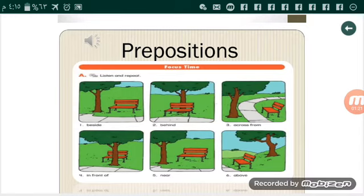Number 3: Across from, في الجهة المقابلة. Where is the tree? The tree is across from the seat. Number 4: In front of, أمام. Where is the tree? The tree is in front of the seat.